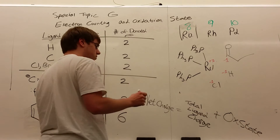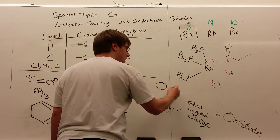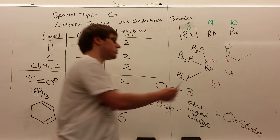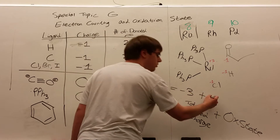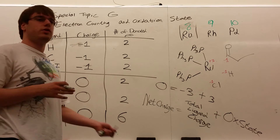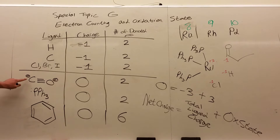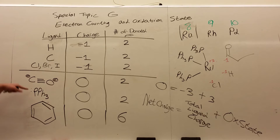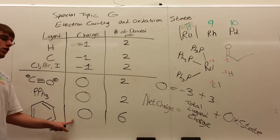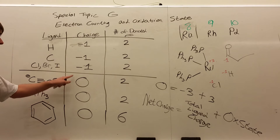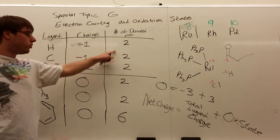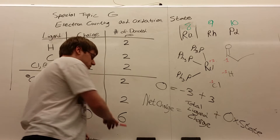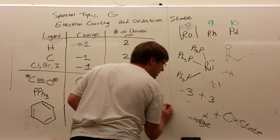Applying that formula: net charge is zero, total ligand charge is minus three (Cl, H, and C each give minus one), so oxidation state must be plus three. The other common ligands you'll see are C≡O (carbon monoxide), PPh3, and sometimes benzene. These do not contribute a charge and have no effect on oxidation state. What they do affect is the total number of electrons in the valence shell of the metal.